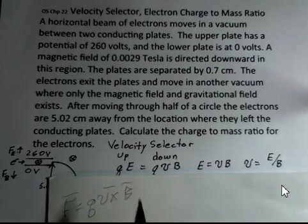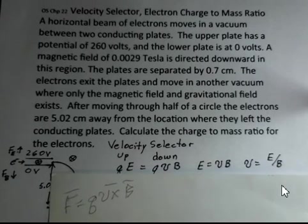To simplify this, the Q's are the same on both sides. So it's just the electric field value equals the velocity times the magnetic field value. Or the velocity is equal to the electric field divided by the magnetic field.